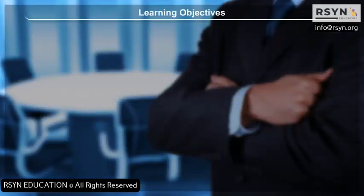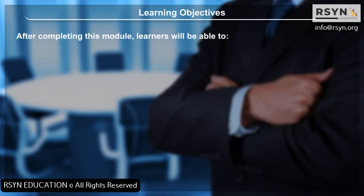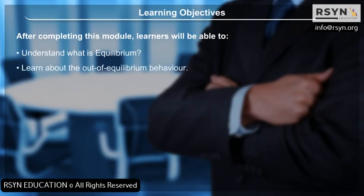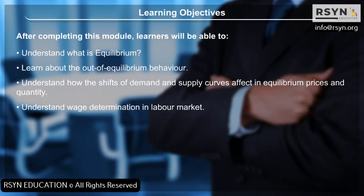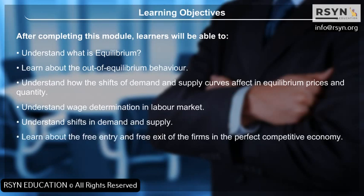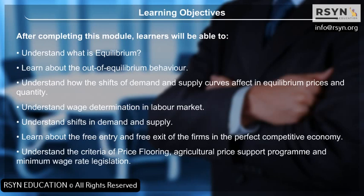Learning Objectives: After completing this module, learners will be able to understand what is equilibrium, learn about out-of-equilibrium behavior, understand how shifts of demand and supply curves affect equilibrium prices and quantity, understand wage determination in the labor market, understand shifts in demand and supply, learn about free entry and free exit of firms in a perfectly competitive economy, and understand the criteria of price flooring, agricultural price support programs, and minimum wage rate legislation.